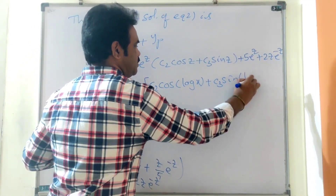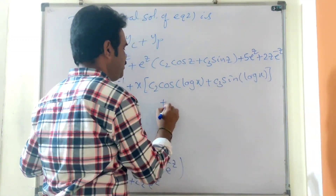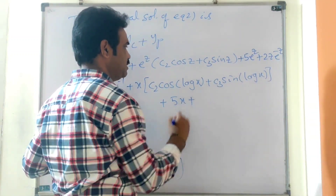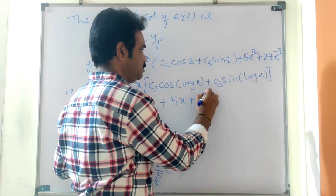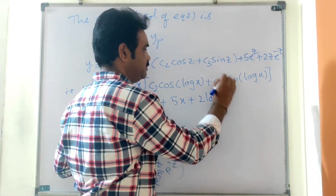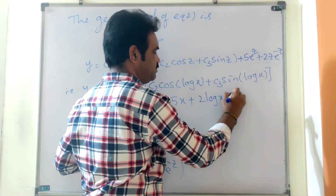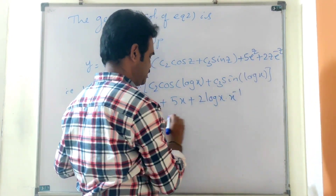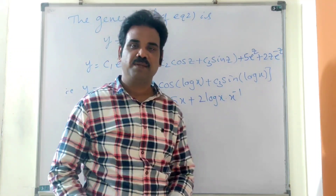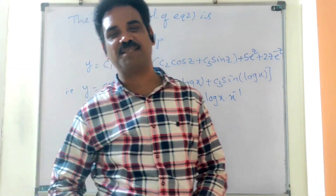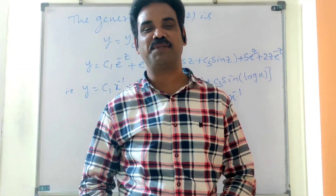Writing in terms of x, where z = log x, e^z = x, and e^(−z) = 1/x: y = c1/x + x·(c2·cos(log x) + c3·sin(log x)) + 5x + 2·(log x)/x. This is the required solution. Hope you understand Cauchy's Linear Equation. Thank you so much for watching. See you in the next video.